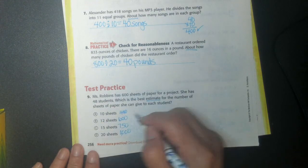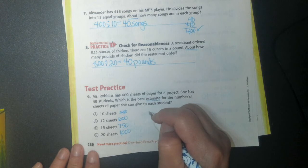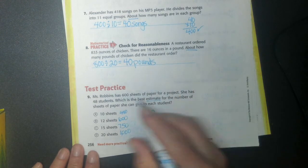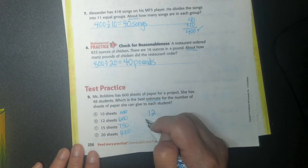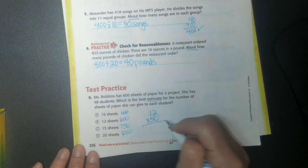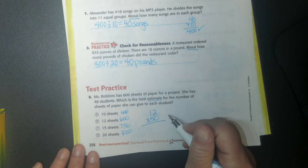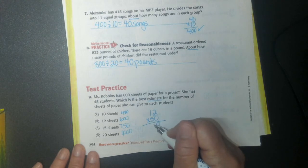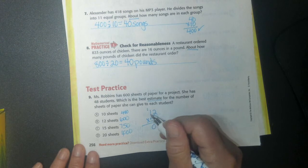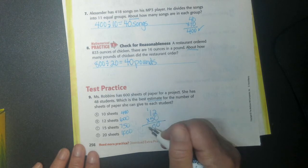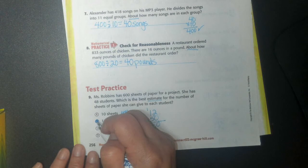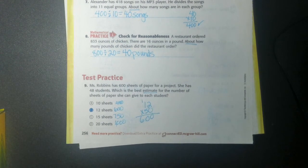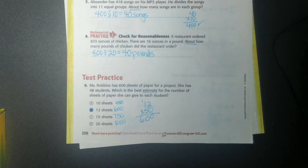So let's see. If she had 12 sheets of paper times 48 students, I'm going to double check it just to make sure. She has 12 sheets of paper times 48 students, but we're going to say times 50 students. So 2, we're going to put our 0. 2 times 5 is 10. I carry my 1. 5 times 1 is 5 plus 1 is 6. So 600. So I'm going to say the best answer is that 12 sheets, 600. That's about right. And we're done.